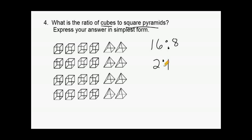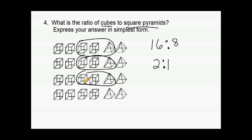We could say that there are exactly two cubes for every individual square pyramid. For example, here are two cubes for one square pyramid, two more cubes for another square pyramid — two to one, two to one — and this pattern continues for all remaining pairs. So the ratio in this problem is two to one.